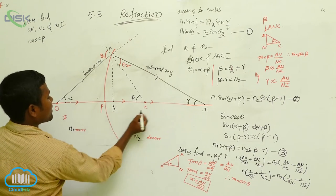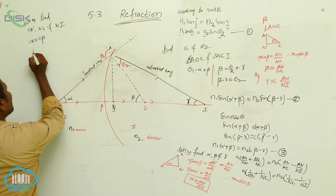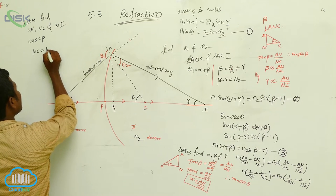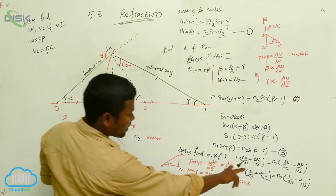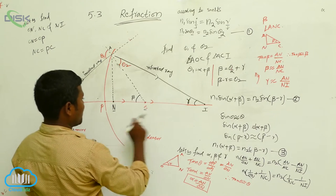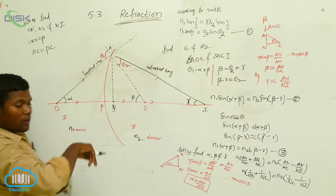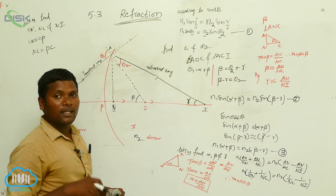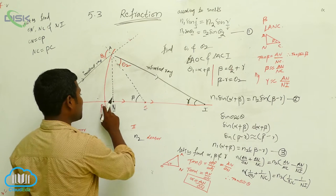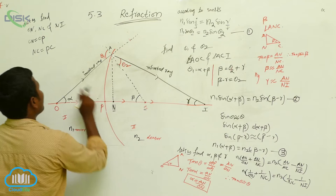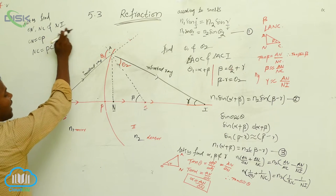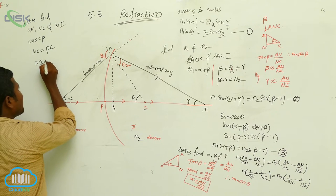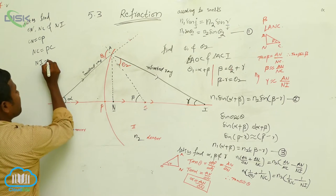Now look at the figure. ON is equal to OP, NC is equal to PC, and NI is equal to PI. We can now write directly from the diagram: OP is the object distance. The distance between the object and the pole is U. The distance from the pole to the image is V. The distance from the pole to the centre of curvature, PC, is the radius of curvature R.